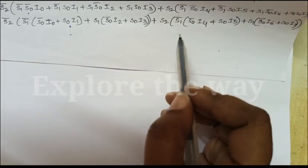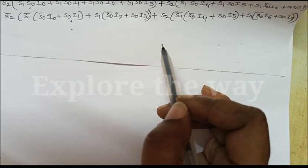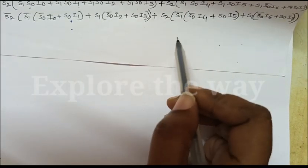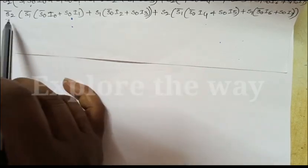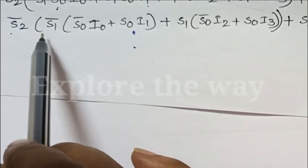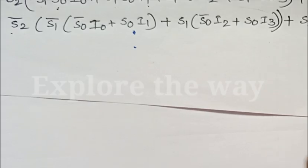We are going to draw the logic diagram using CMOS pass transistors. From the two terms, when S2 is 0 this path will be active, and when S2 is 1 this path will be active.